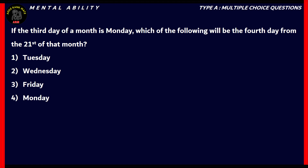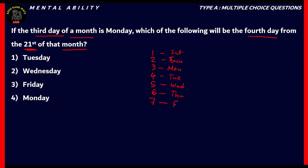Now let's look at another question. If the third day of a month is Monday, which would be the fourth day from the 21st of that month? We're told the 3rd is Monday, so the 2nd is Sunday and the 1st is Saturday. Continuing: 4th is Tuesday, 5th is Wednesday, 6th is Thursday, and 7th is Friday.